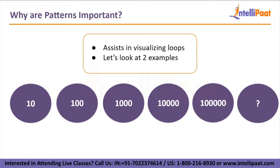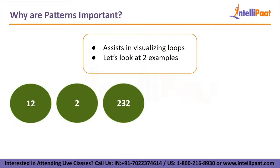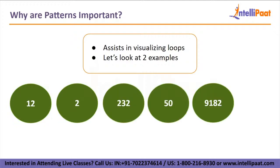What we did consciously or subconsciously was recognize a pattern and predict an outcome. In this case, the number of zeros increased by one each time a new number was displayed. In contrast, with a random set like 12, 2, 232, 50, and 9182, it would be nearly impossible to predict the next number — hence patterns always help in future predictions.